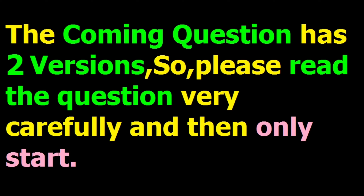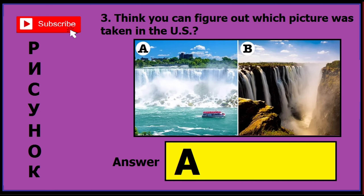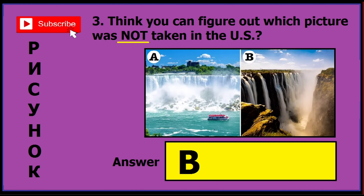This coming question also has two versions, just like the previous ones, so please read the question very carefully. In version one, if the question is 'which picture was taken in the US?' the correct answer is A. In version two, if the question is 'which picture was not taken in the US?' the answer is B.